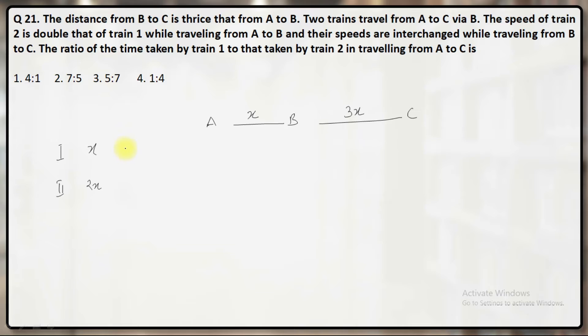And for the next part of the journey, that means from B to C, they will interchange their speeds. That means now it will become 2X and X respectively.